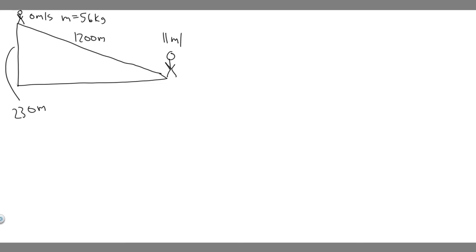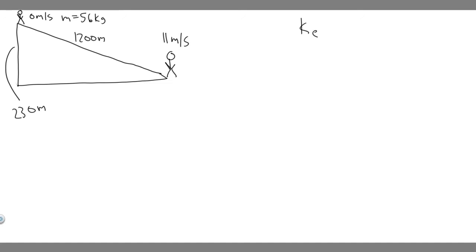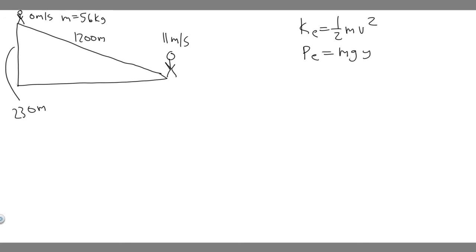What we're trying to find is how much energy was dissipated by friction. In order to do that, there are some formulas you need to know. The formula for kinetic energy is one half mv squared, and potential energy is equal to mgy, where y represents the height. These are the formulas we're going to use in order to solve.